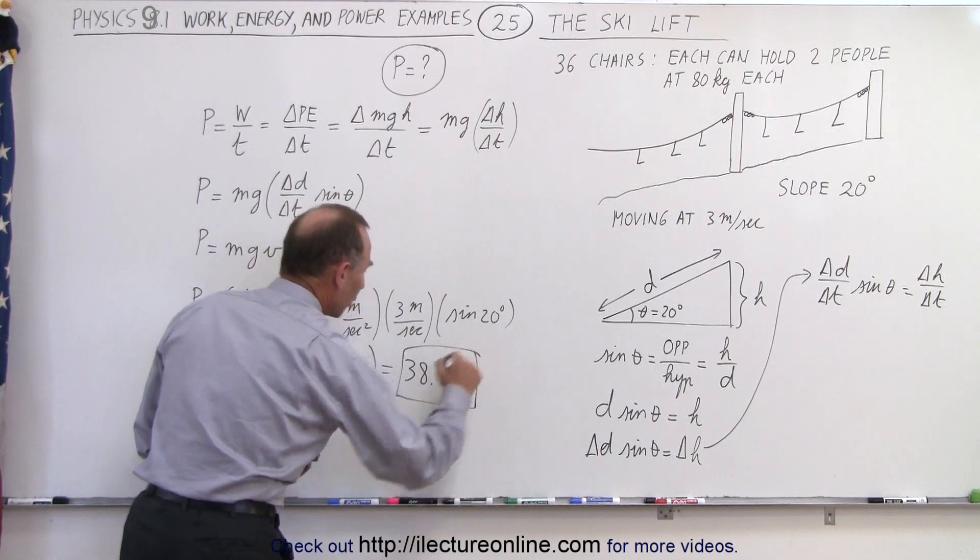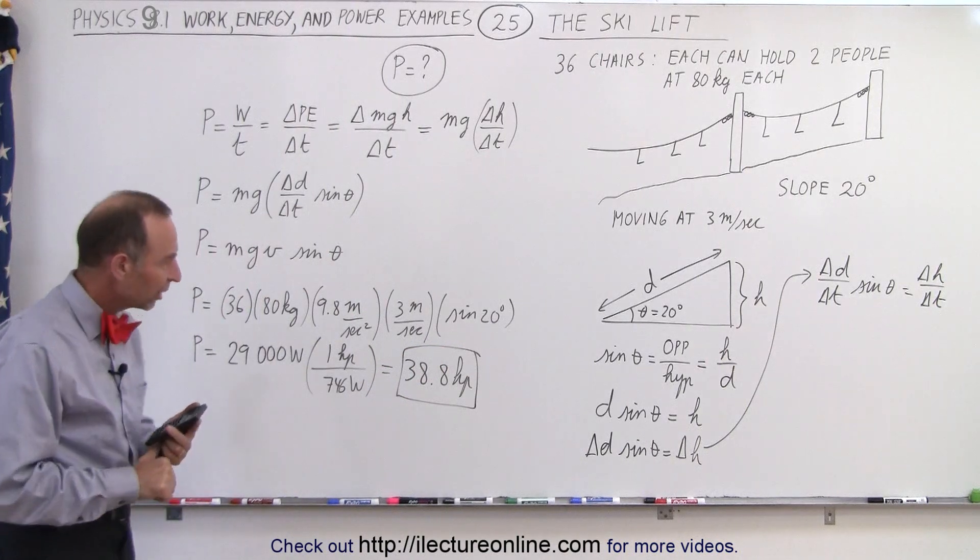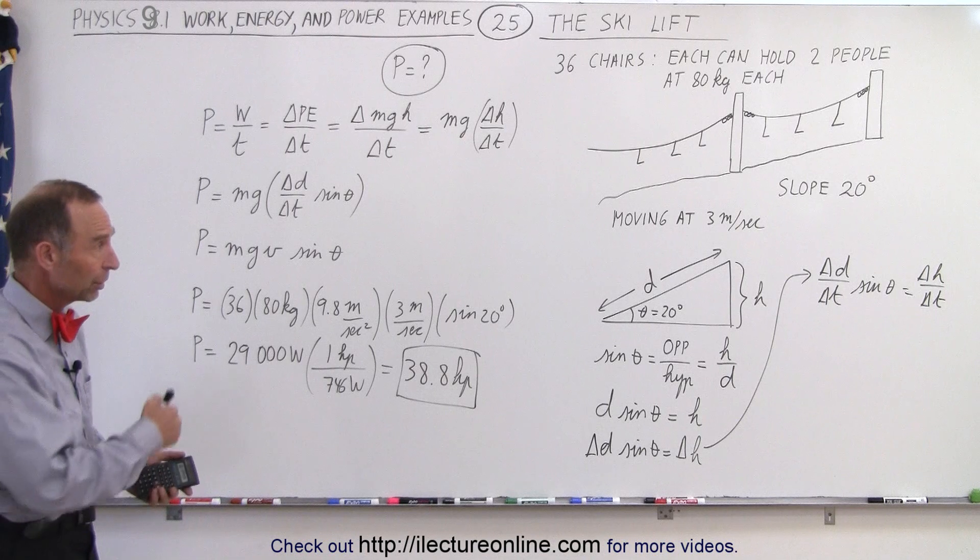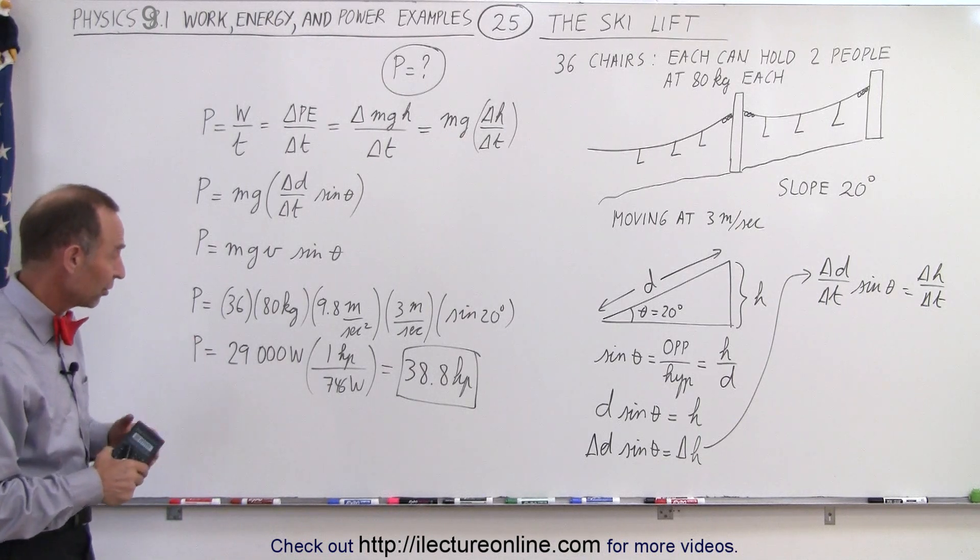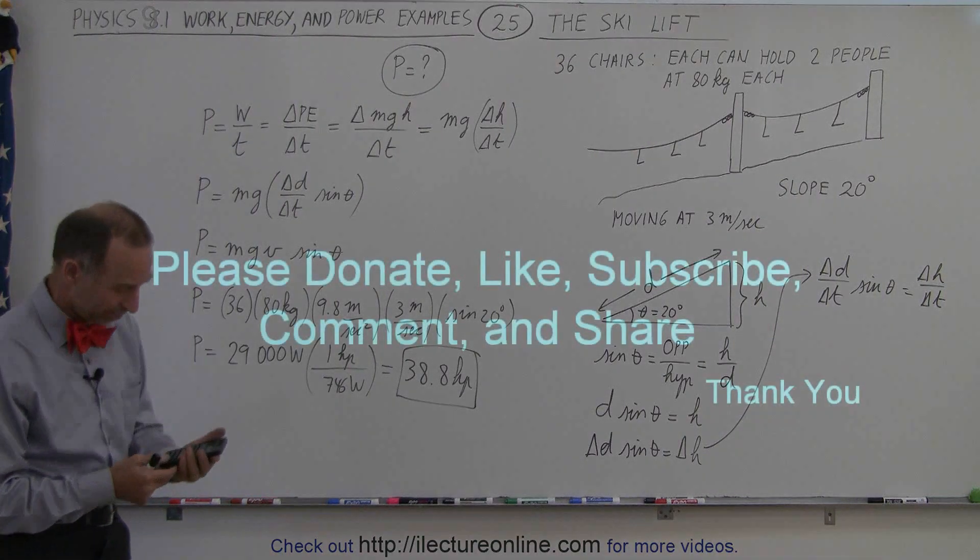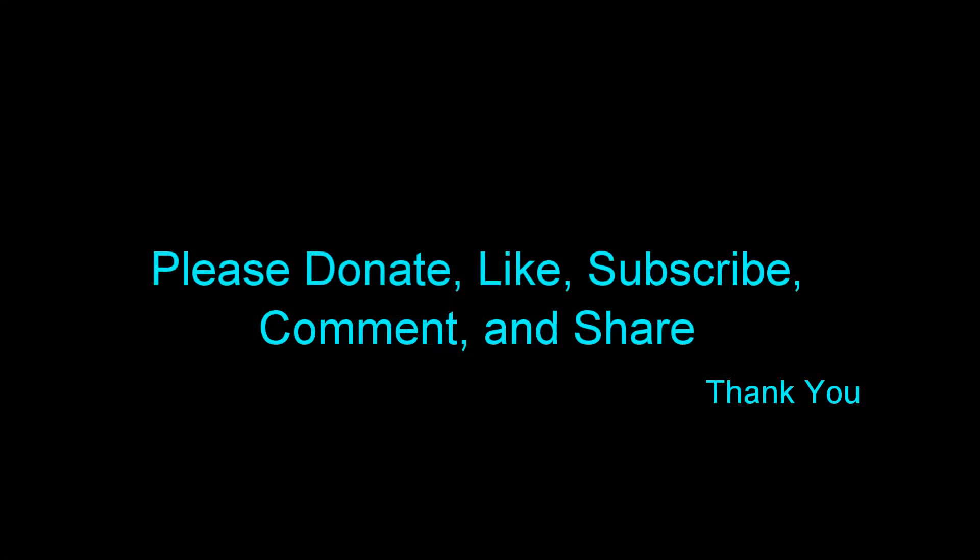So you need a pretty good sized motor, electric motor, to pull those skiers up the hill, but about 40 horsepower can do it. If we ignore all the lack of efficiencies and friction, that's what it's going to take, and that's how it's done. Thank you.